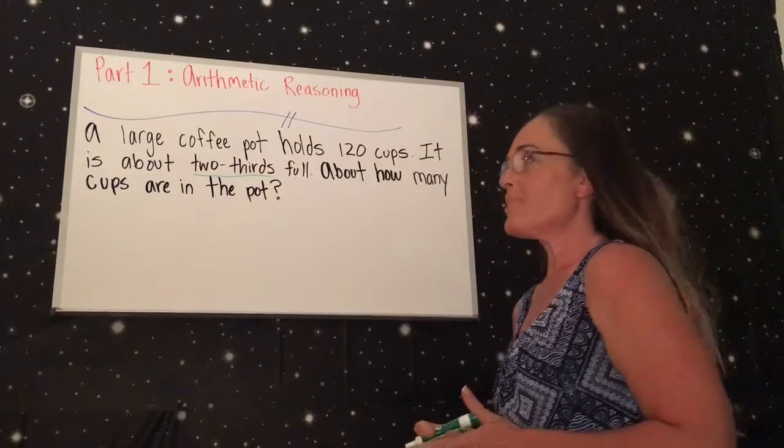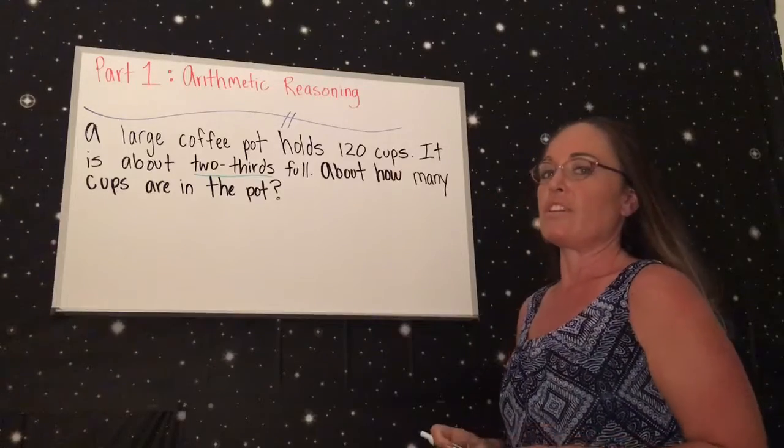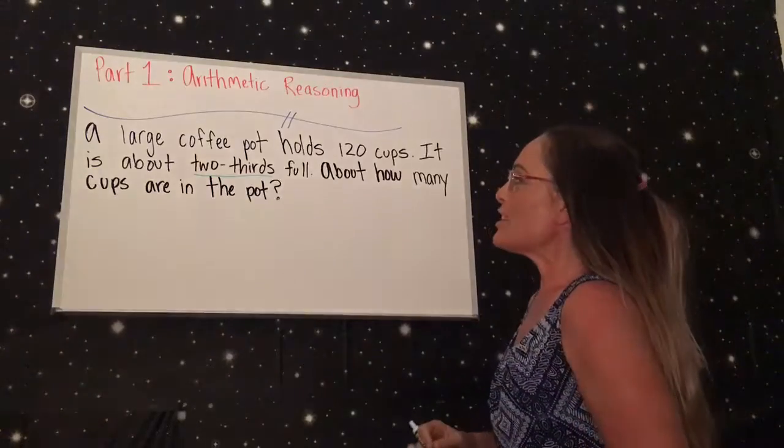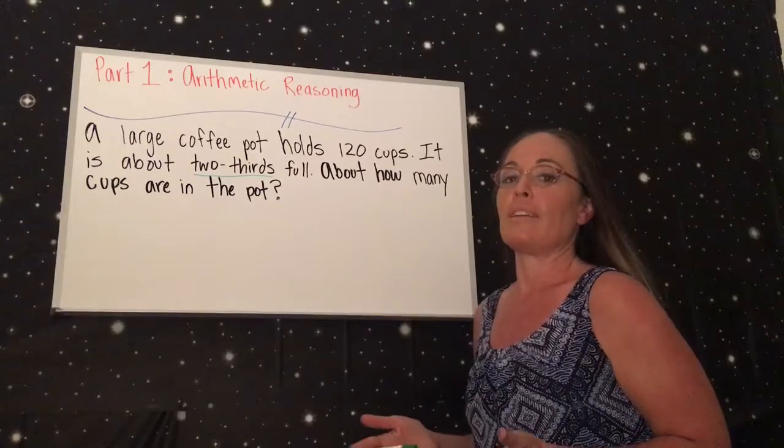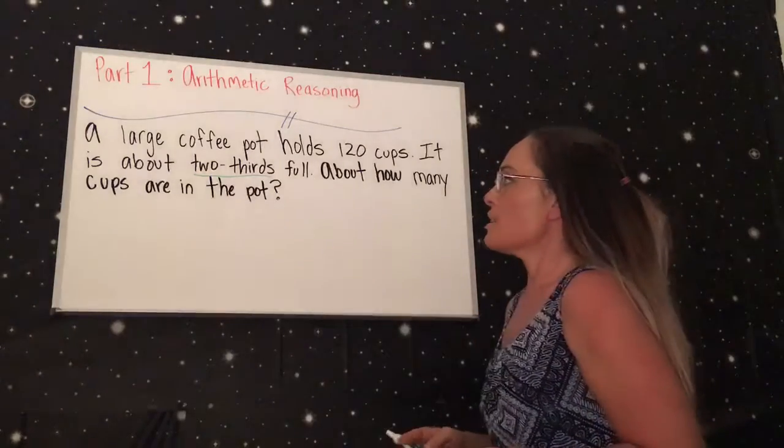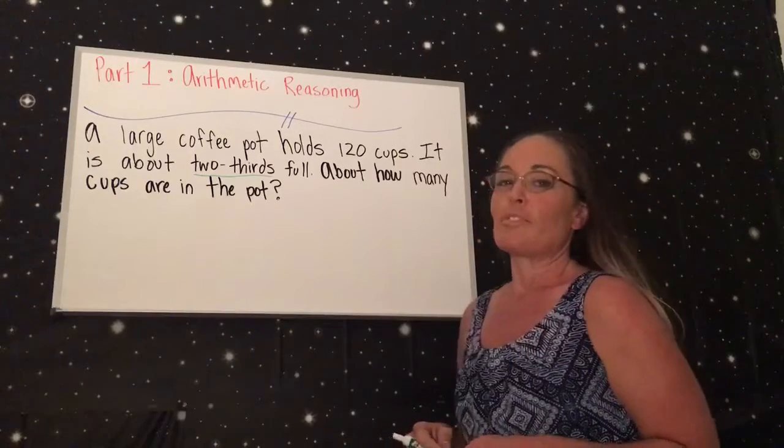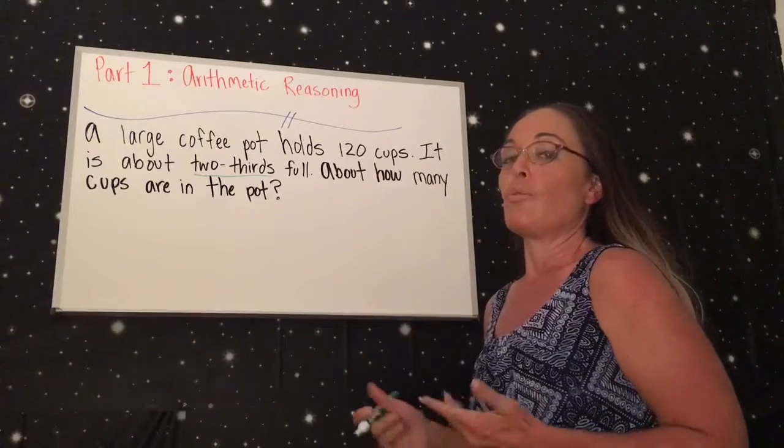So now we're going to do a word problem. Let's just read it and see if we can figure it out. It says a large coffee pot holds 120 cups, so that's the total amount in the coffee pot. It is about two-thirds full. About how many cups are in the pot?